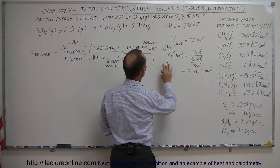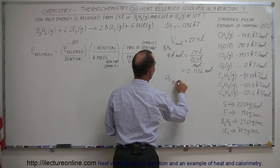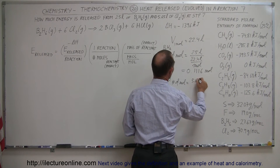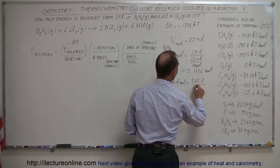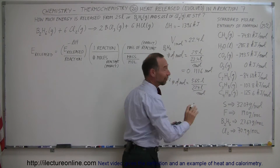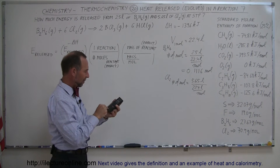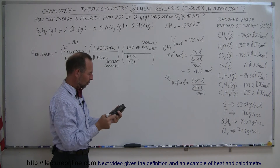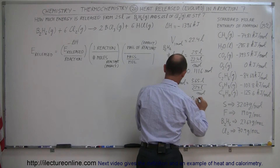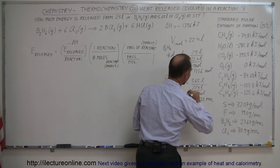For chlorine gas, the number of moles equals 5.65 liters divided by 22.4 liters per mole — it's the same conversion for all gases. So 5.65 divided by 22.4 gives us 0.2522 moles of chlorine gas.